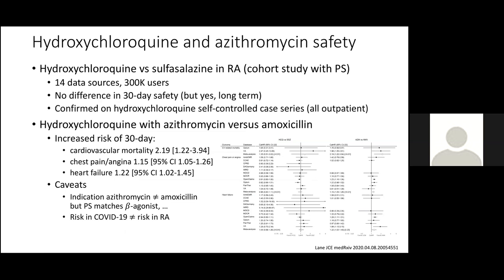My last slide covers an OHDSI study on hydroxychloroquine and azithromycin safety in pre-COVID patients, comparing hydroxychloroquine to sulfasalazine in rheumatoid arthritis — a cohort study with propensity score matching, currently in revision at The Lancet but available on archive. With 14 data sources and 300,000 users per group, there was no difference in 30-day safety. We did see a difference in cardiovascular safety for hydroxychloroquine in the long term, but not short term. A separate self-controlled case series of all outpatients confirmed the safety of hydroxychloroquine, though patients in the ICU with COVID have additional risks, so this may not be relevant to the ICU.